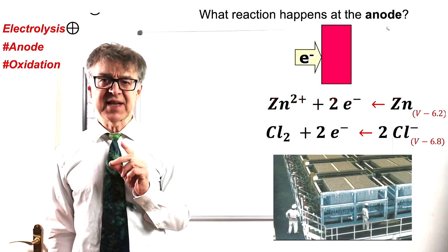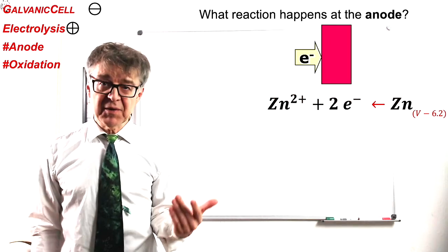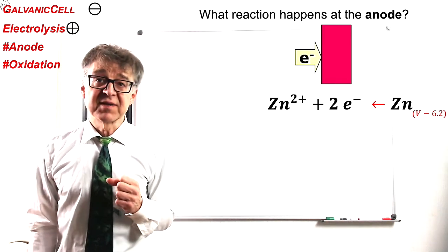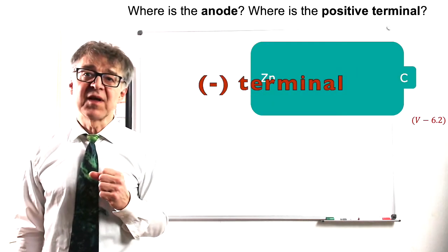In galvanic cells, however, the anodic reaction takes place voluntarily. Here the anode is the negative terminal, for example, the zinc electrode in the zinc carbon battery.